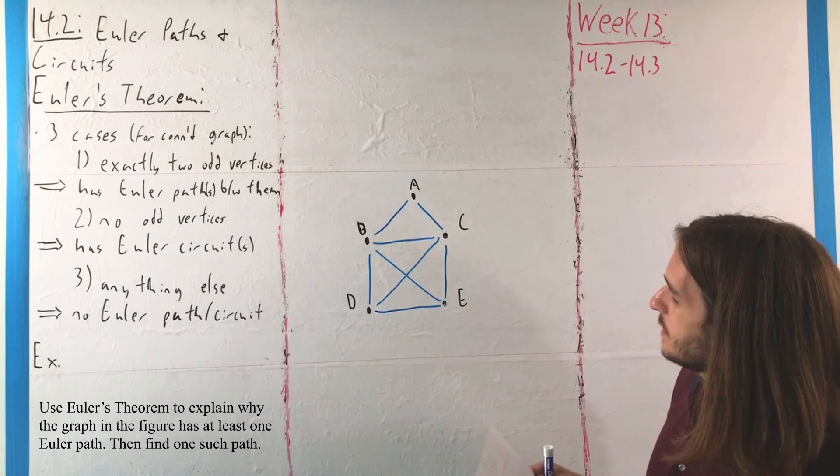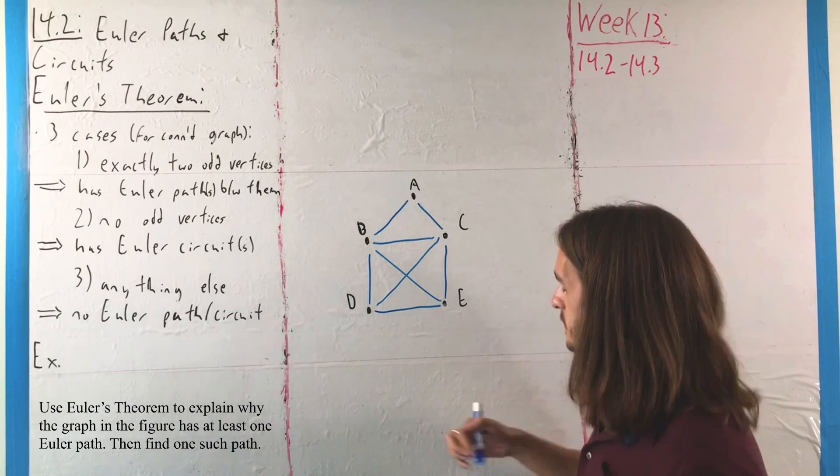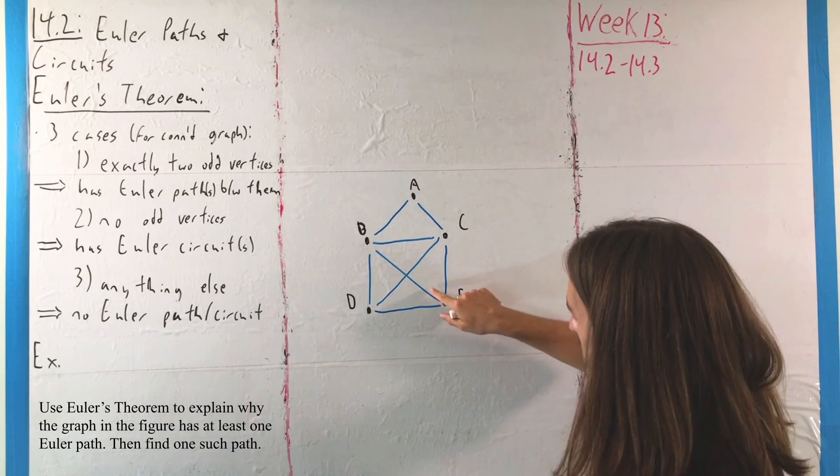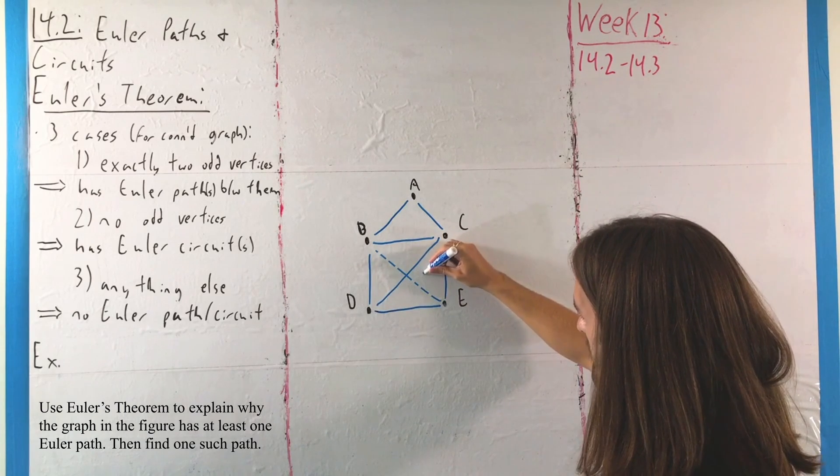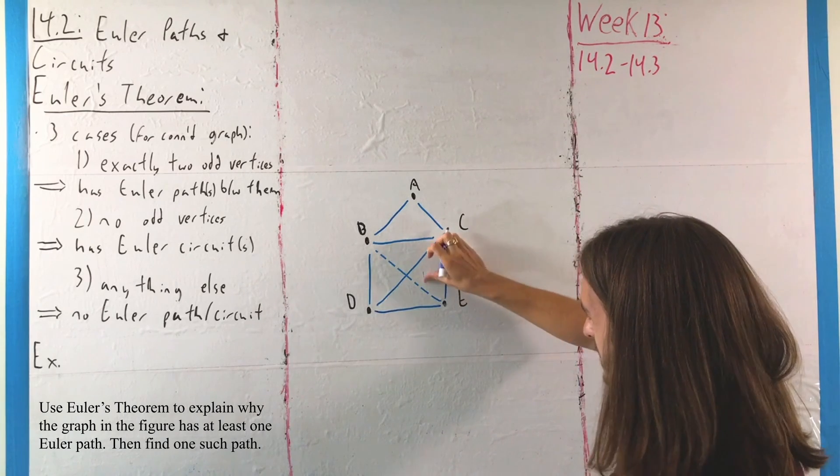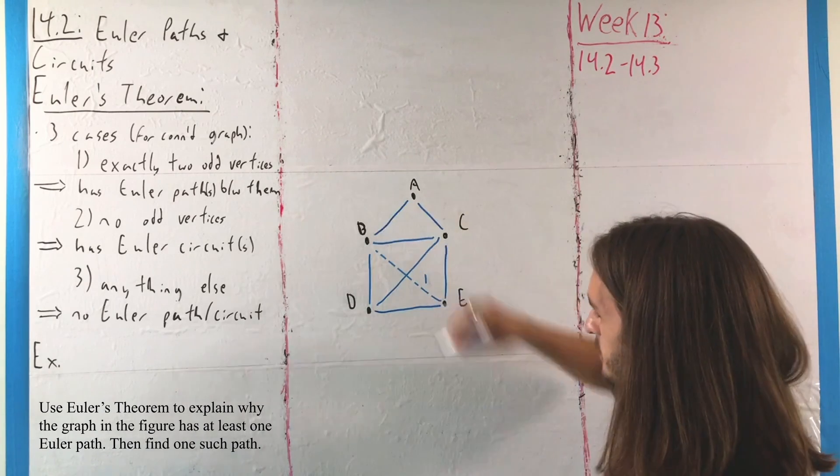One potential option we can use here for an Euler path would be something that might start here, down at vertex E, so I'm going to dash this vertex. No, not E - I want to write 1 for the edge, because that's the first one. We're going from E to B.